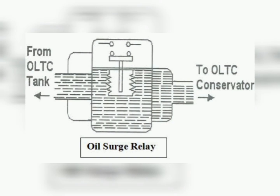An oil surge relay is a type of protection device used to protect transformers from damage caused by oil surge. Oil surge can occur when there is a sudden change in the oil level inside the transformer, such as a sudden increase or decrease, caused by factors such as a fault, a change in load, or a change in oil temperature. The oil surge relay is typically installed in the transformer's conservator tank, which holds the oil that cools and insulates the transformer. The relay detects changes in the oil level and responds by tripping the circuit breaker, interrupting the flow of electricity to prevent damage.